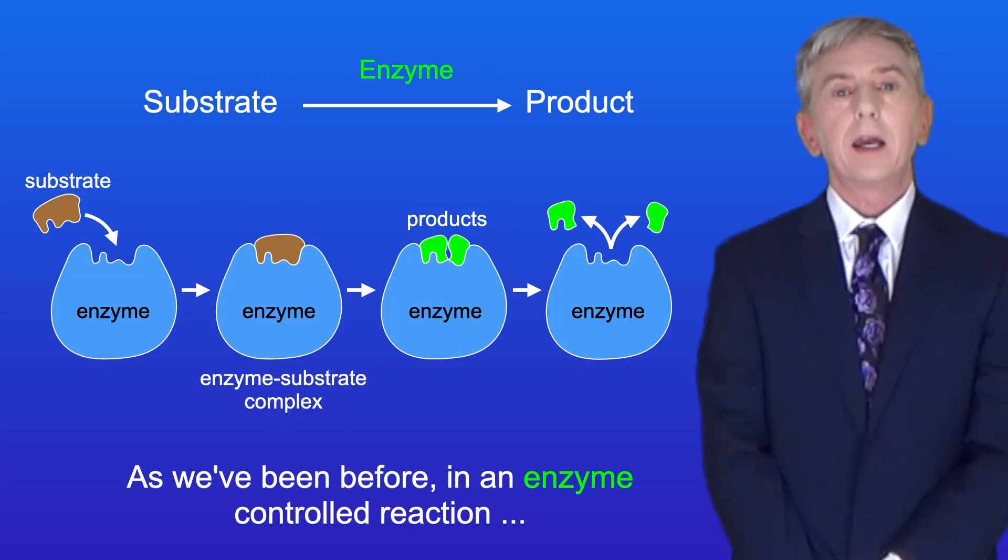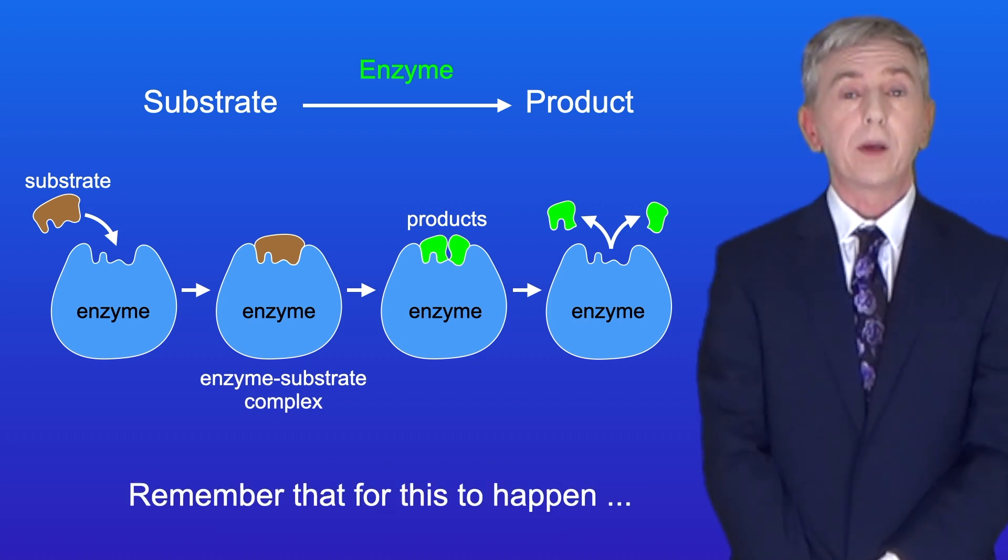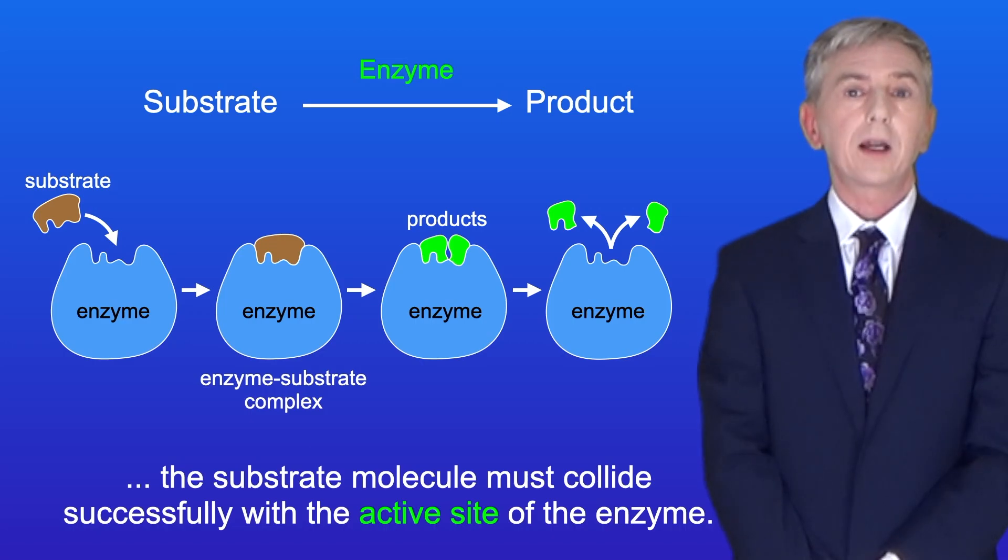As we've seen before, in an enzyme-controlled reaction a substrate molecule is converted into a product molecule. And remember that for this to happen the substrate molecule must collide successfully with the active site of the enzyme.